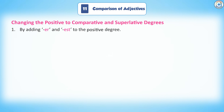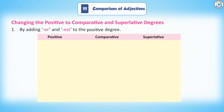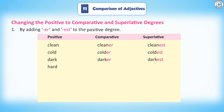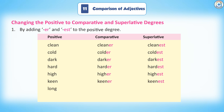Rule 1: By adding -ER and -EST to the positive degree. Positive, comparative, superlative: Clean, cleaner, cleanest. Cold, colder, coldest. Dark, darker, darkest. Hard, harder, hardest. High, higher, highest. Keen, keener, keenest. Long, longer, longest.